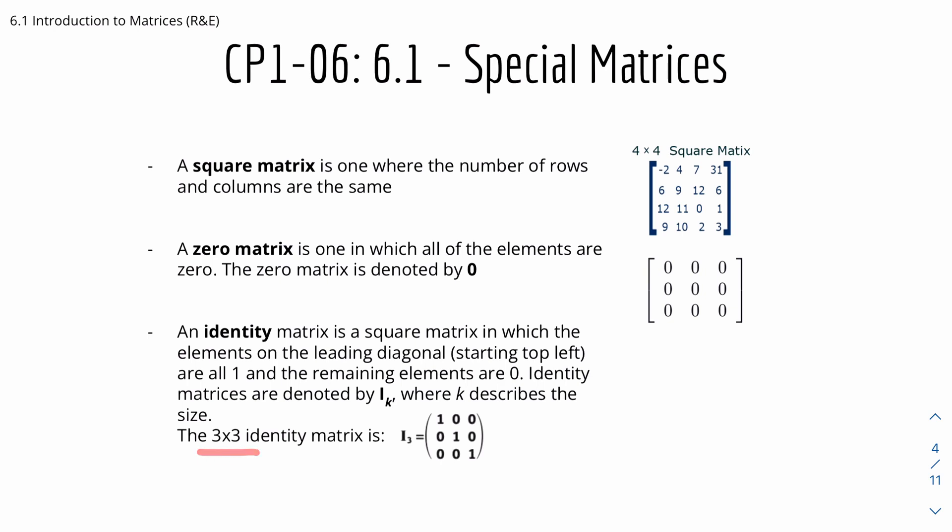So if we have a 3 by 3 identity matrix it will be denoted as i subscript 3 which is described as 1 0 0, 0 1 0, 0 0 1. So let's say if we have i2 it will be 1 0 0 1, or if we have i4 it will be 1 0 0 0, 0 1 0 0, 0 0 1 0, 0 0 0 1 like so. Notice that the leading diagonal starting from top left is all 1 and the rest of the numbers are 0.